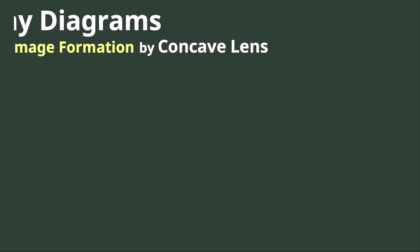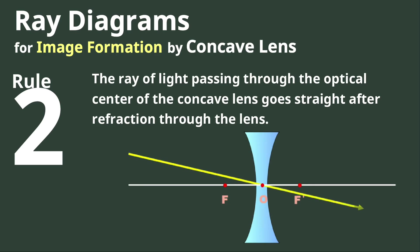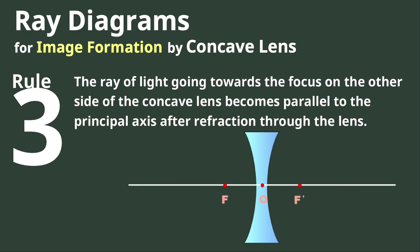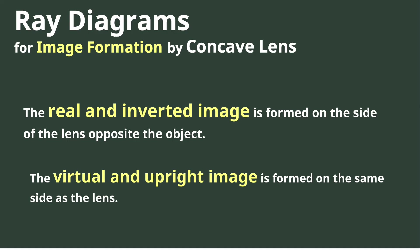For ray diagrams of the concave lens, take note of the following rules. Rule 1: the ray of light parallel to the principal axis of the concave lens appears to be coming from the focus after refraction through the lens. Rule 2: the ray of light passing through the optical center of the concave lens goes straight after refraction. Rule 3: the ray of light going towards the focus on the other side of the concave lens becomes parallel to the principal axis after refraction. The real and inverted image is formed on the side opposite the object, while the virtual and upright image is formed on the same side as the lens.